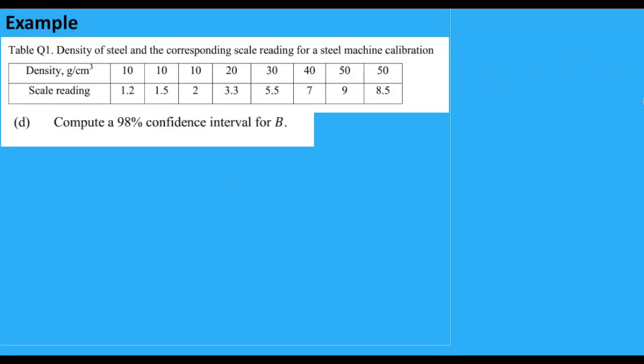Let's move on to the continuation of the past year final exam question. So you are given the same data and you are asked to compute a 98% confidence interval for B or the population slope. So as previously discussed, the 98% confidence interval for the slope is B plus minus T alpha over 2. The degrees of freedom is n minus 2.